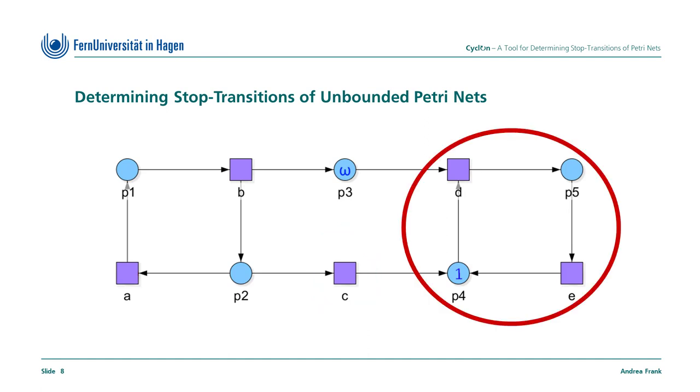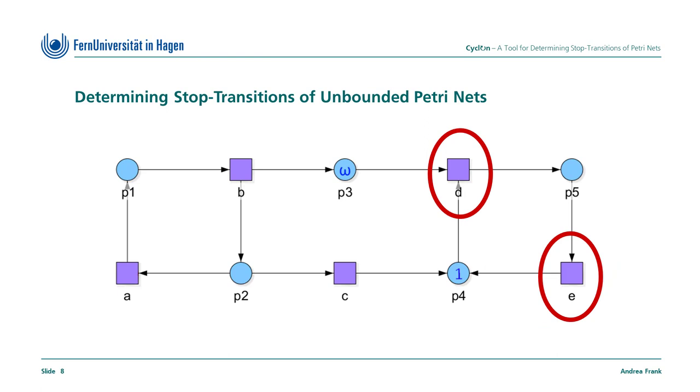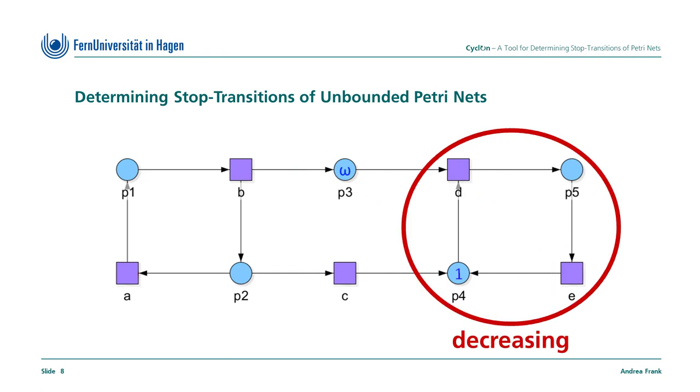Now, let's look at the right part. Consider the cycle of this net with transitions D and E. Firing D and E results in fewer and fewer tokens on the place P3. So, this cycle has a decreasing effect. But how can this property be used for the determination of stop transitions?